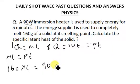Our t is five minutes. We want to convert five minutes to seconds: five times 60 seconds. So 160L multiplied equals 90 times 5 times 60.